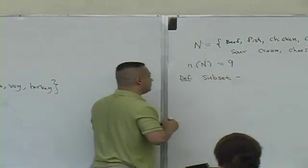Let me give you a definition of a subset. Now, here's how we describe this. We say A is a subset of B. This is called the subset notation.